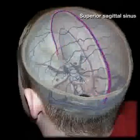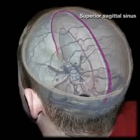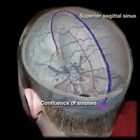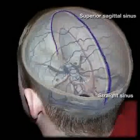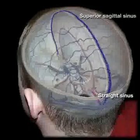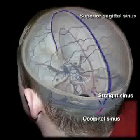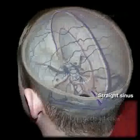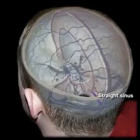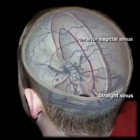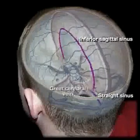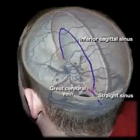Blood in the superior sagittal sinus flows posteriorly to the confluence of sinuses, where it unites with the straight sinus and occipital sinus. The straight sinus is formed by the inferior sagittal sinus and the great cerebral vein.